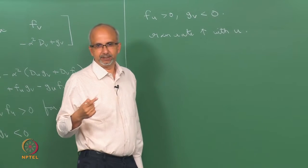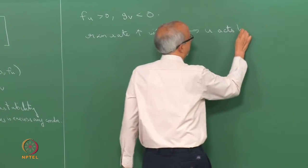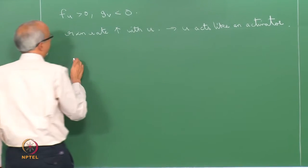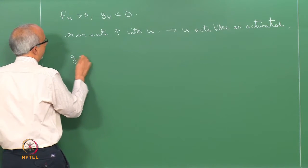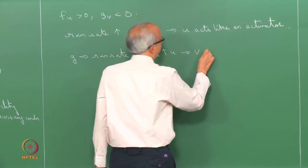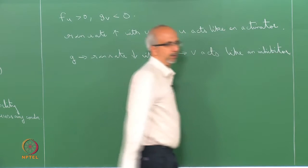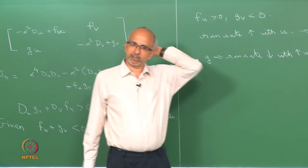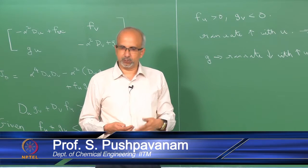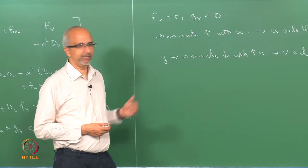What we had assumed towards the end of the last class was that fu was greater than zero and gv was negative. Because of this dependency, the reaction rate F increases with U — that is what it means. So as you increase U, the reaction rate increases, meaning U acts like an activator. As far as the other reaction rate G, the reaction rate decreases with an increase in U, meaning V acts like an inhibitor. So you need to have this kind of dependency in your chemical reaction rate expression — one species slows down the reaction rate as concentration increases. With regular first-order kinetics, you do not have this inhibition and will not get Turing patterns.